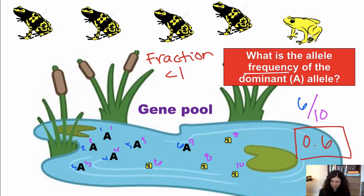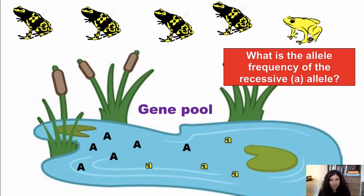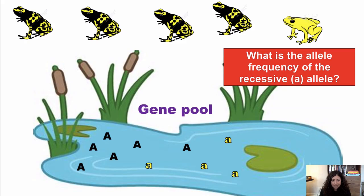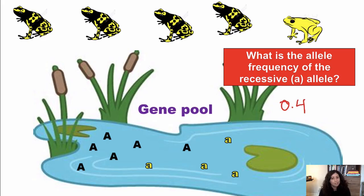For the frequency of the recessive allele, we could count the same way — recessive over total — or we can recognize that we already found the dominant allele is 0.6, so the recessive allele must be 0.4, because that's all that's left.